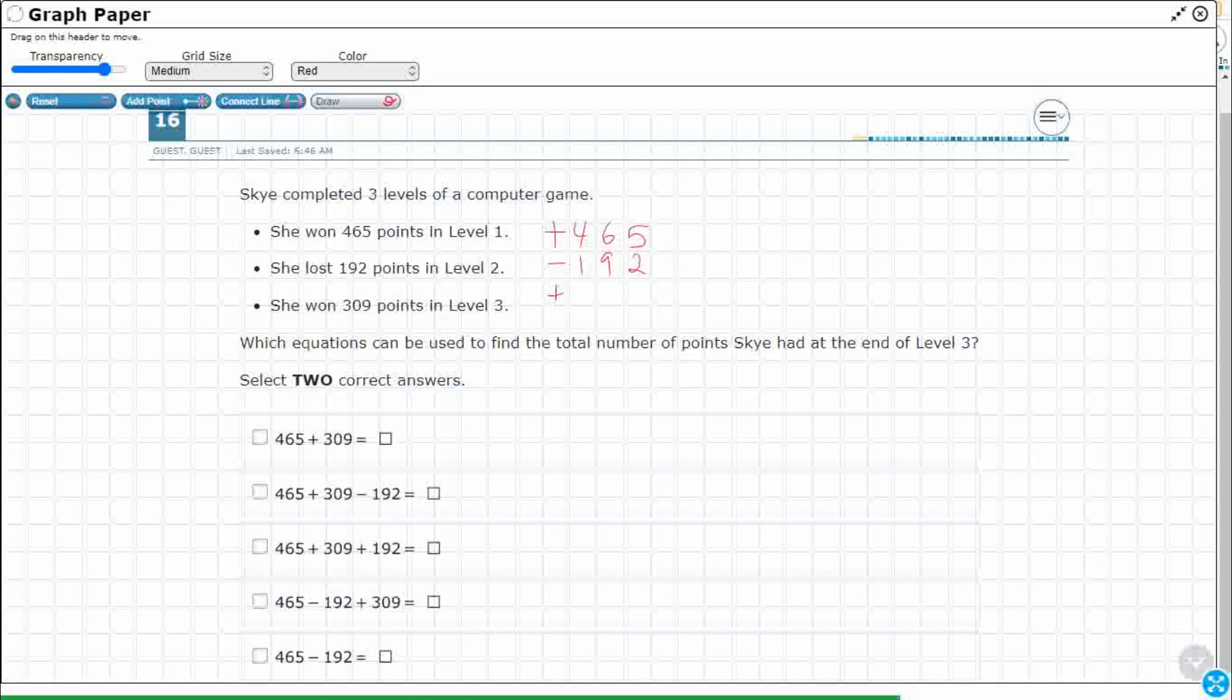So this is what I would do. I would take my 465, now you notice there's no plus on the front. If there's no operation in front of it, it is assumed to be positive. We'll get more into positive and negative numbers when we get into middle school. So we would take our 465, we would subtract our 192, and then we would add our 309.